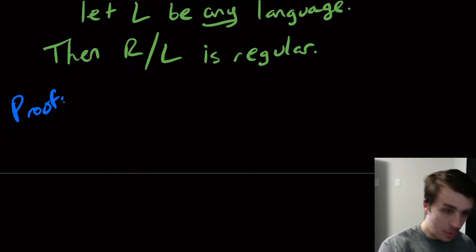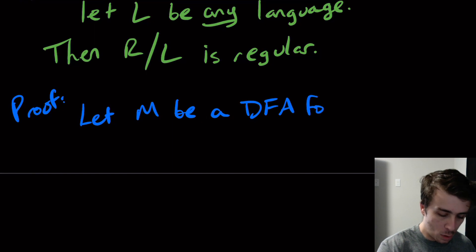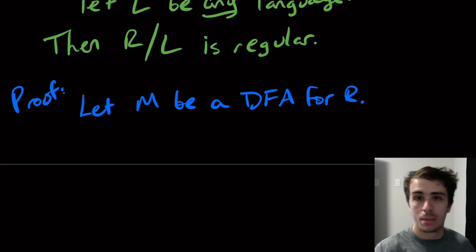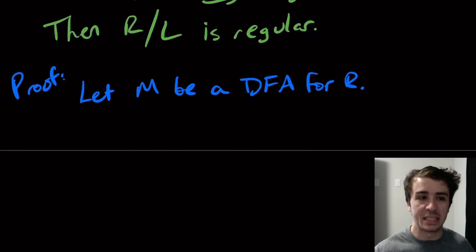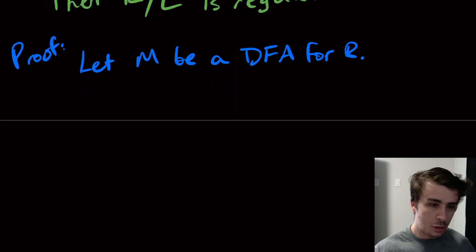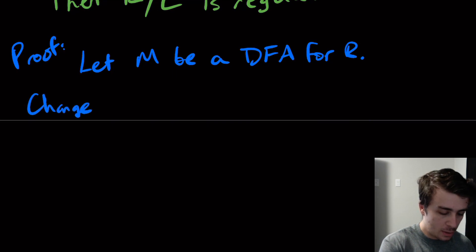Let M be a DFA for R. Because we know it's regular, there is a DFA for it. So what will we actually do here? Then all that we're going to do, the only thing that we're going to do, is we're going to change the final states of that machine M.